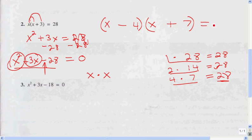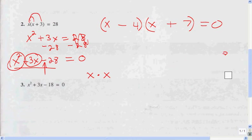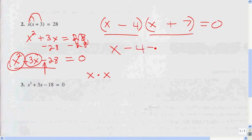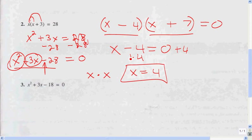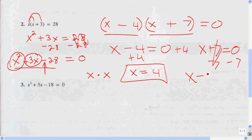Once we get to this point, we separate the factors and make them each equal to zero. So X minus 4 equals 0 — we add 4 to both sides and get X equals 4. That's our first answer, positive 4. Then X plus 7 equals 0 — we subtract 7 from both sides and get X equals negative 7. So our two answers are X equals 4 and X equals negative 7.